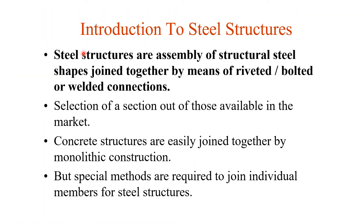Selection of a section is done from those available in the market. For example, if only W-sections are available and other sections like C-sections or angle sections are not, then we design our structures based on the sections available in the market. Concrete structures are easily joined by monolithic construction, where steel bars of one member extend into another, but in steel structures special methods are required to join individual members — riveted, bolted, and welded connections.